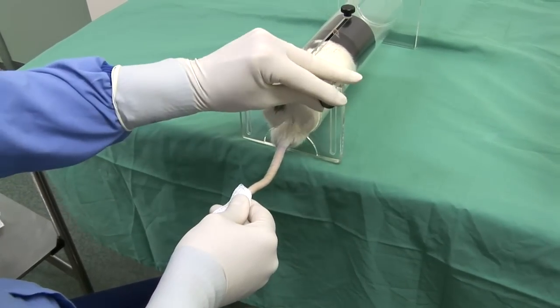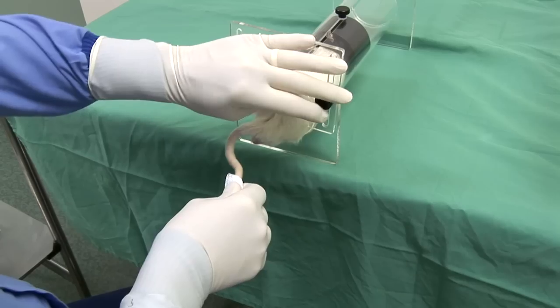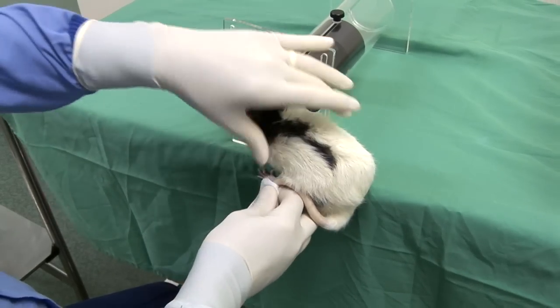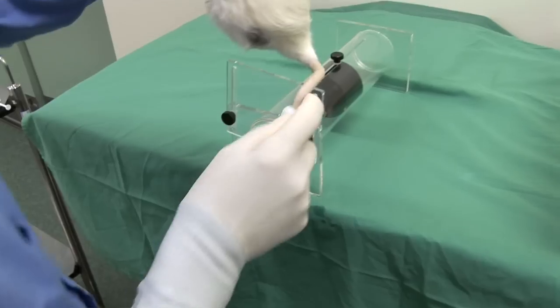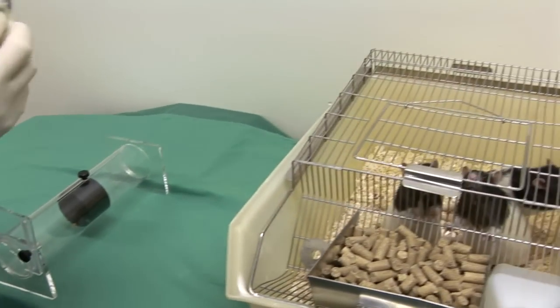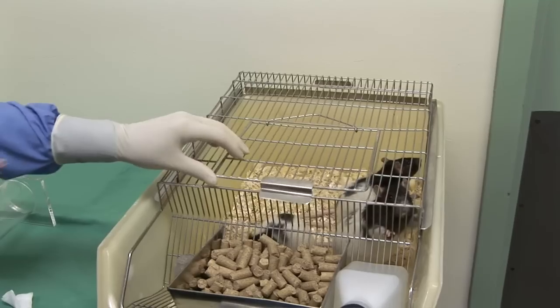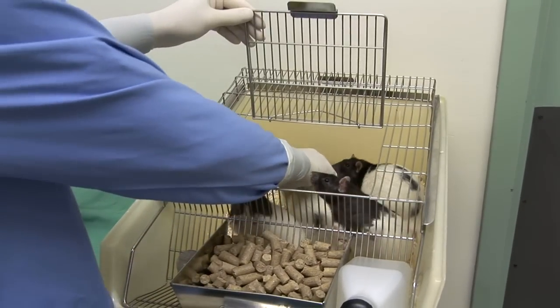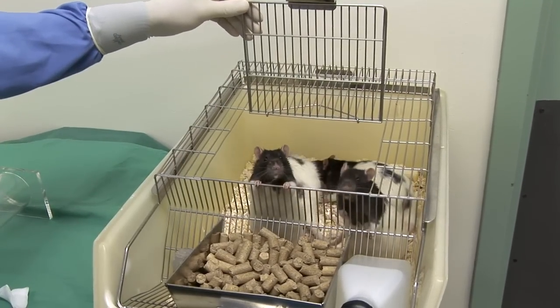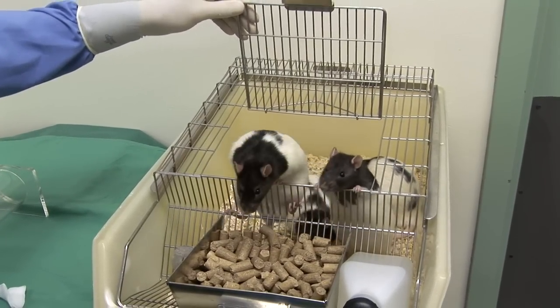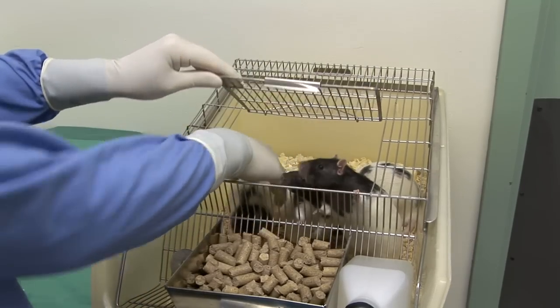Once bleeding has stopped, the rat is placed back into its cage and released. When releasing the rat, maintain a secure grip until its feet have made contact with the cage floor then gently release it. Prior to release it may be identified, for example with a tail mark, to confirm that the injection has been administered.